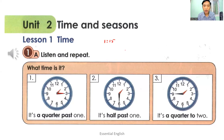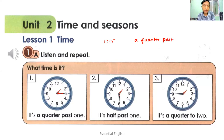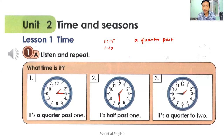This is the use of 'a quarter past': Q-U-A-R-T-E-R, P-A-S-T. If you look at the second picture, you can see the minute hand pointing to six — it's half past. So it's half past one.